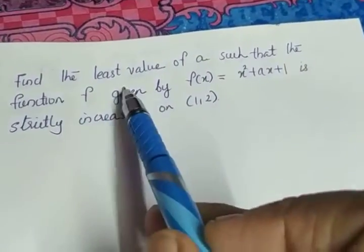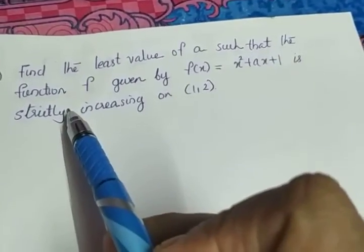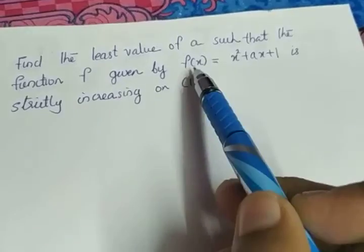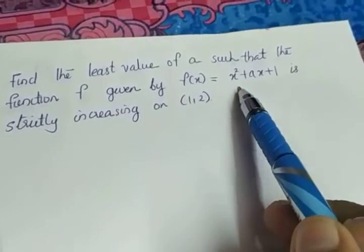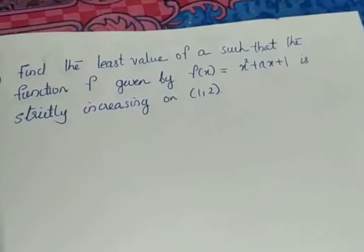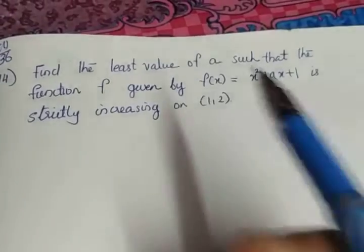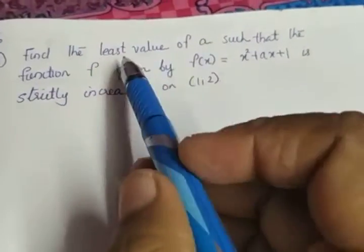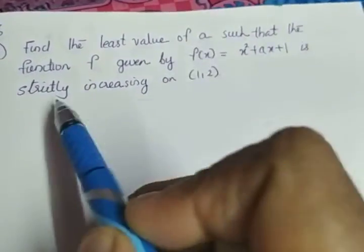The next question: find the least value of a such that the function f given by f(x) = x² + ax + 1 is strictly increasing on the open interval (1, 2). Find the least value of a.